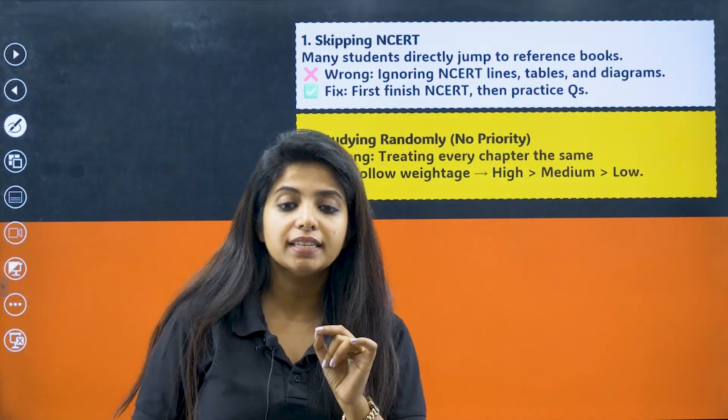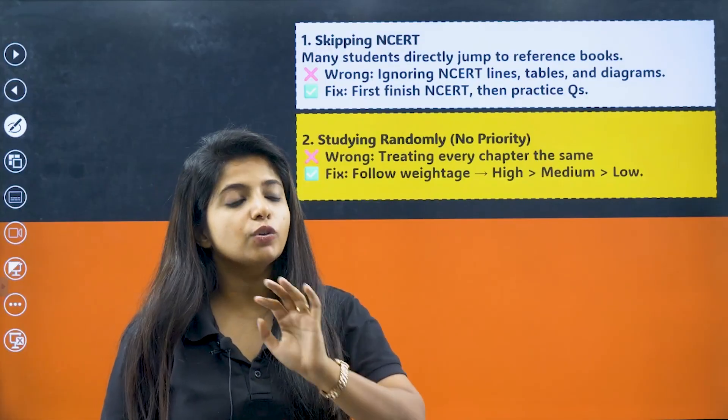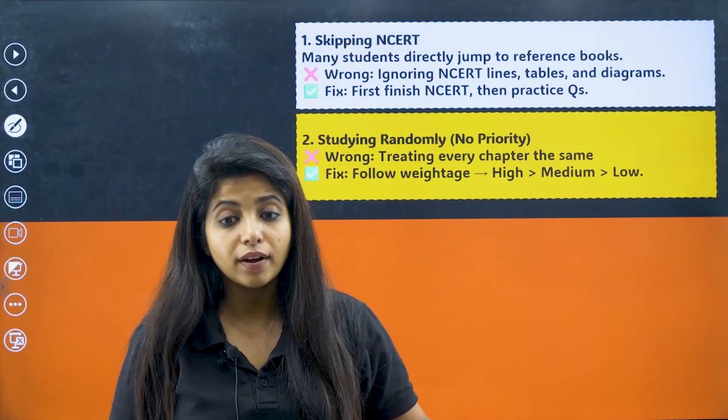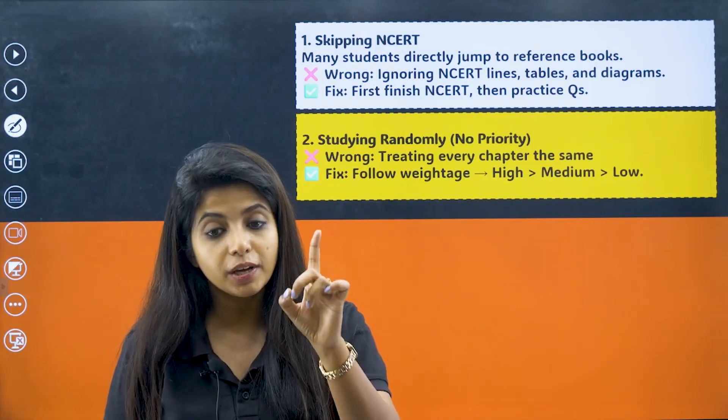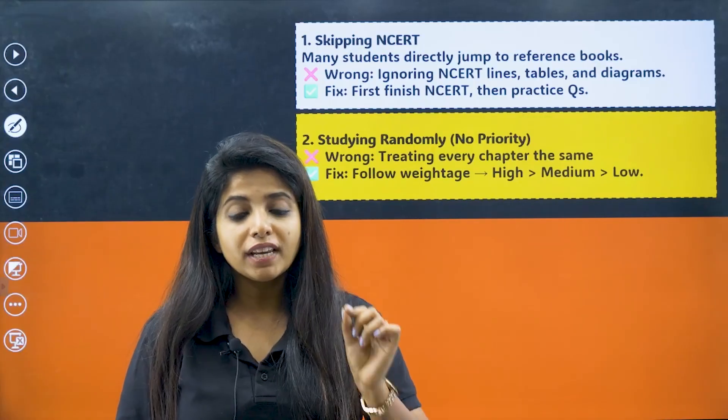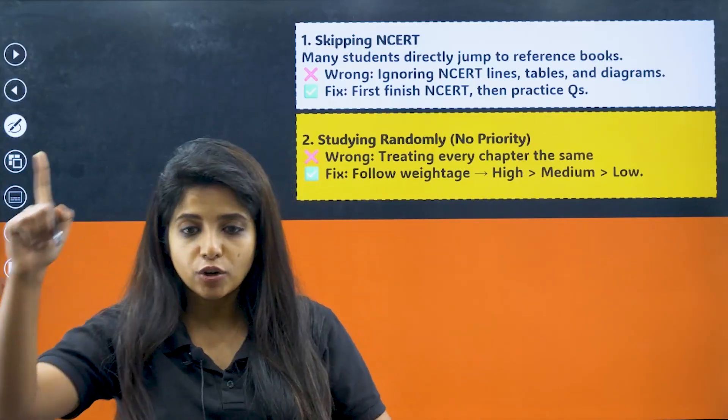So the first mistake is skipping your NCERT. Listen, skipping your NCERT is not at all an option. You cannot do that. You cannot refer to 10,000 books at once. If at all you are doing that, you are doing a big mistake. If at all you are not able to understand your NCERT, watch a one-shot video.